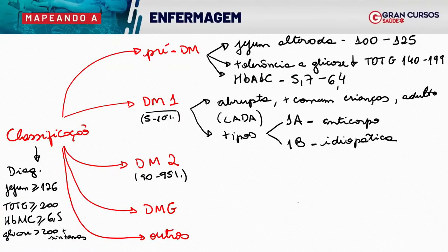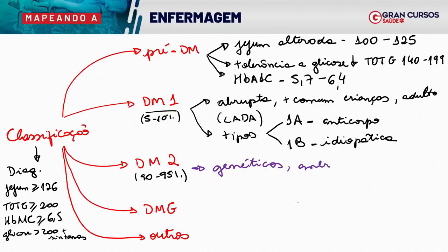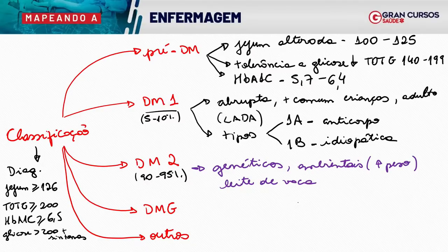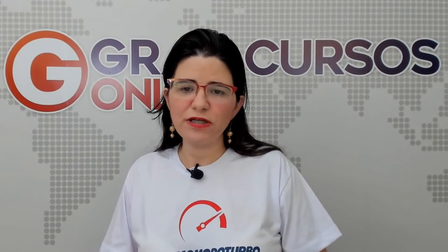No contexto do diabetes tipo 2, há uma conexão forte com fatores genéticos, relacionados a heranças familiares. Mas também tem a ver com fatores ambientais — principalmente o aumento do peso, que vai favorecer o aparecimento do diabetes tipo 2. Também tem relação com acesso precoce ao leite de vaca. Amamentar e receber leite materno protege contra diabetes tipo 2, além de várias outras doenças.